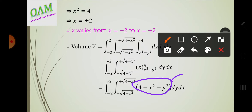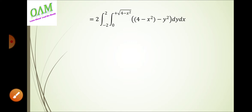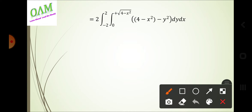Since this is an even function, this limit is 0 and this limit is equal to the front limit. The term 4 - x² is constant, so we can integrate with respect to y. This is constant.